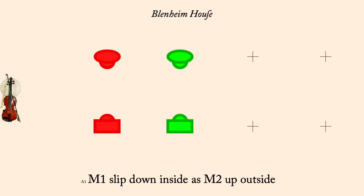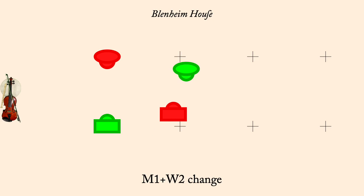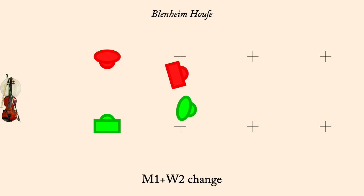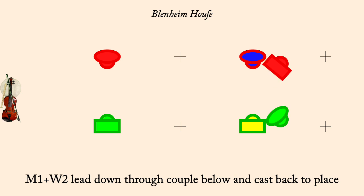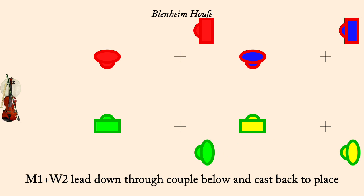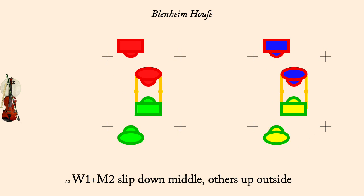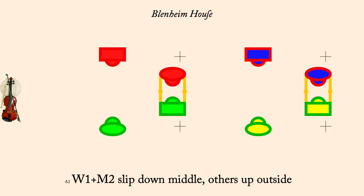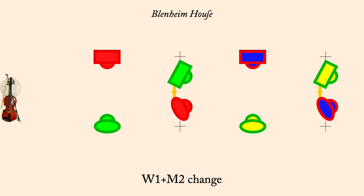Man one slip down, man two up. Man one, woman two change. They lead below next couple and cast back to place. Top couple slip down, bottom up. Woman one, man two change. They lead below next couple and cast back to place.